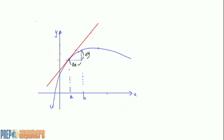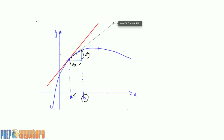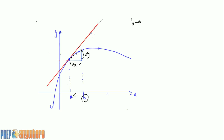Here's how we find the instantaneous rate of change: take the value b on the function and bring it to approach a. Instead of taking a point far away, you take a point closer, and closer, and closer. The line connecting them is a secant line — the average rate of change. As b approaches a, that secant line approaches the tangent line, which is the actual instantaneous rate of change.